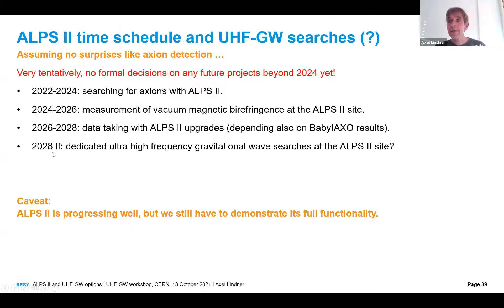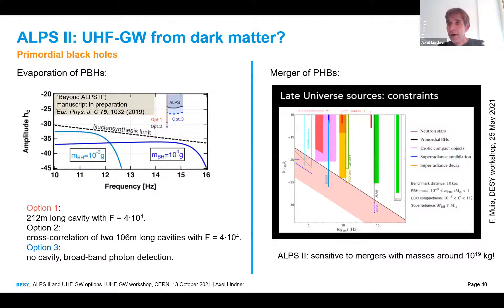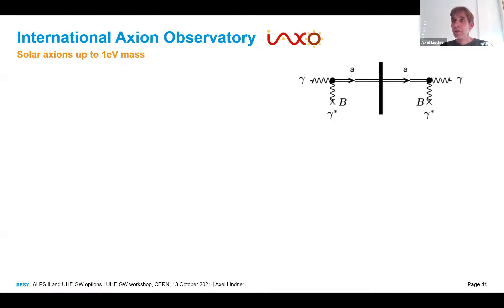After 2028, there could be an option to use this whole infrastructure for gravitational wave searches. ALPS 2 installation is progressing well, though we still have to demonstrate full functionality. The sensitivity reaches shown include three different options: the long cavity configuration, the cross-correlation of both sides of ALPS 2, and a broadband search without an optical cavity. We also show what the sensitivity could be for mergers of primordial black holes if ALPS 2 happens to be aligned to such a merger.